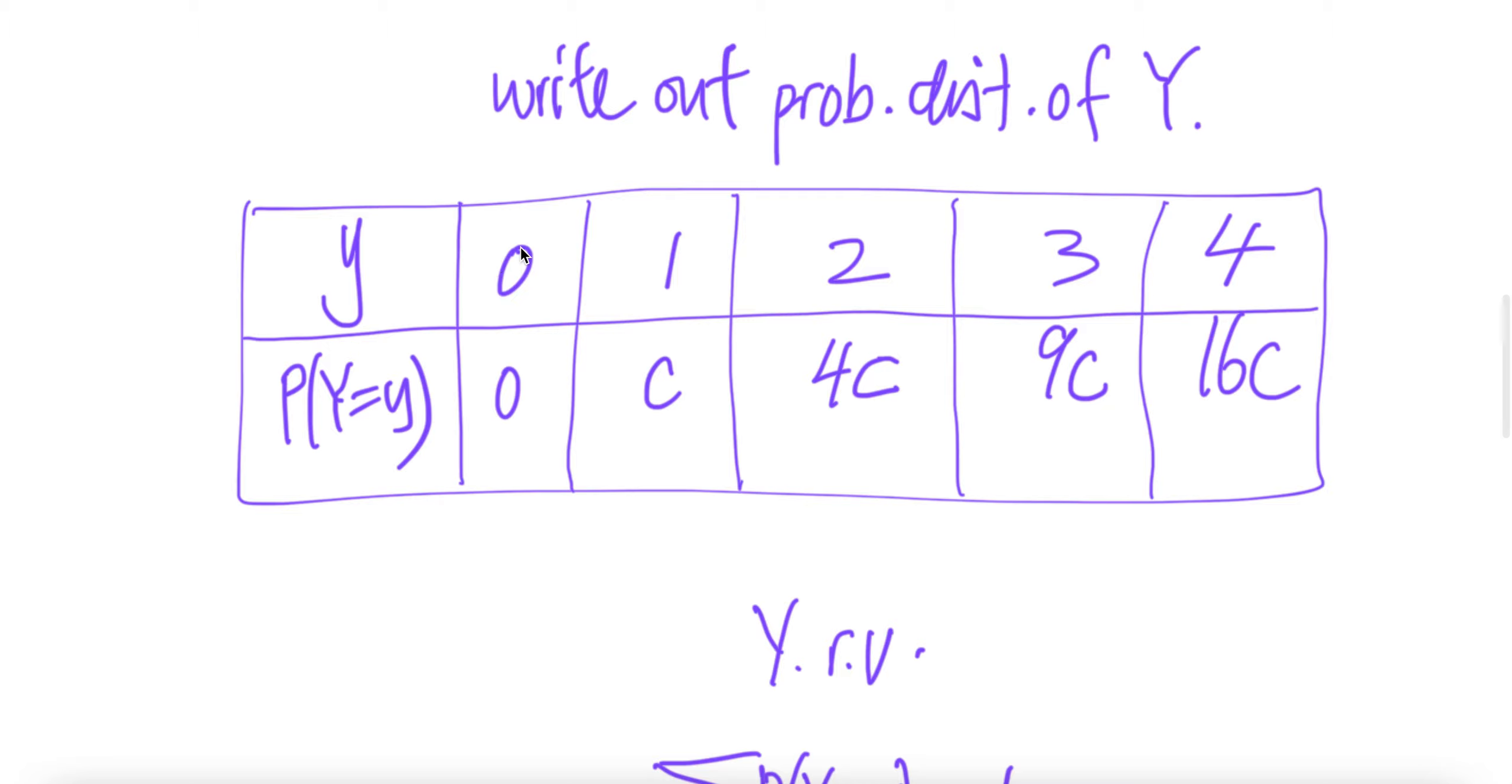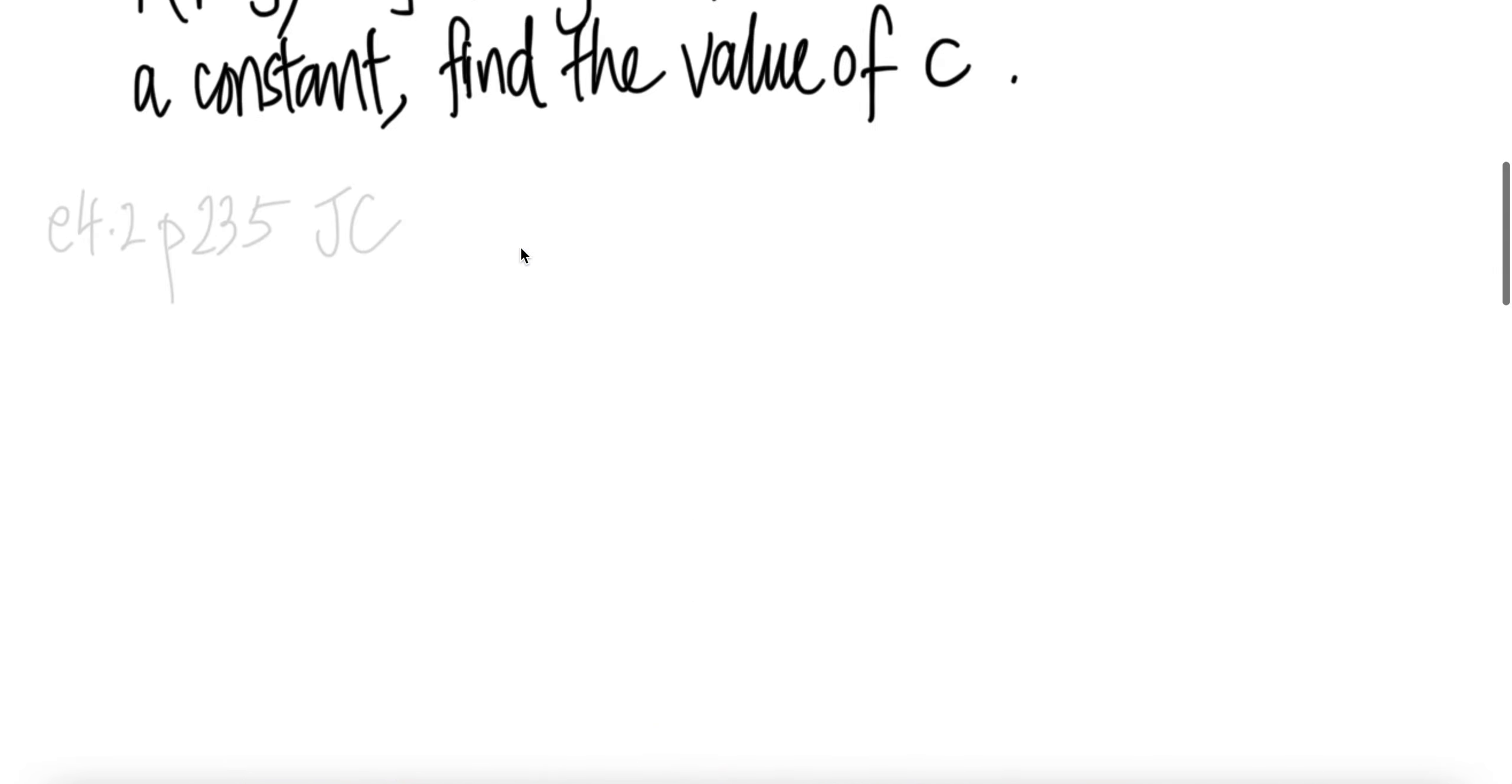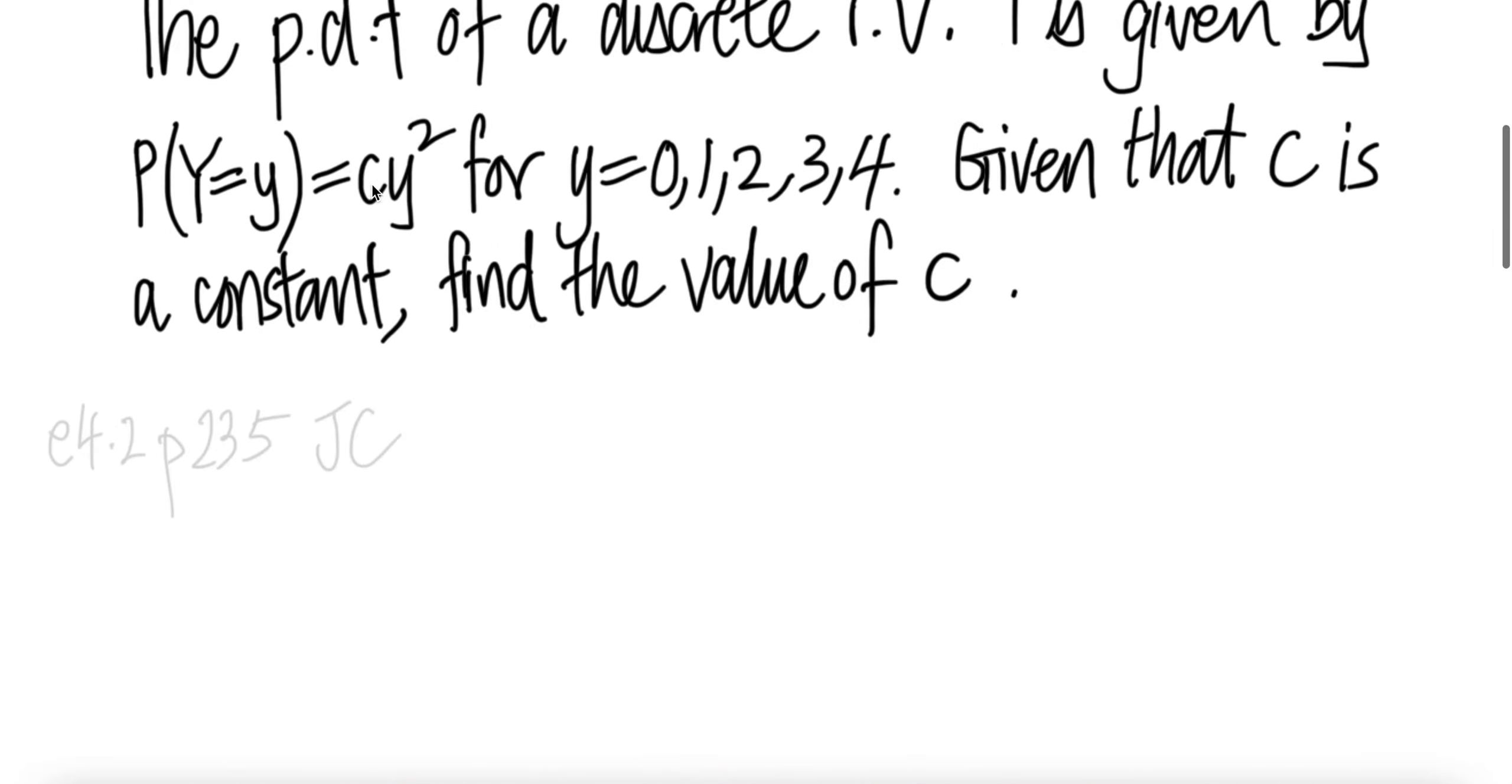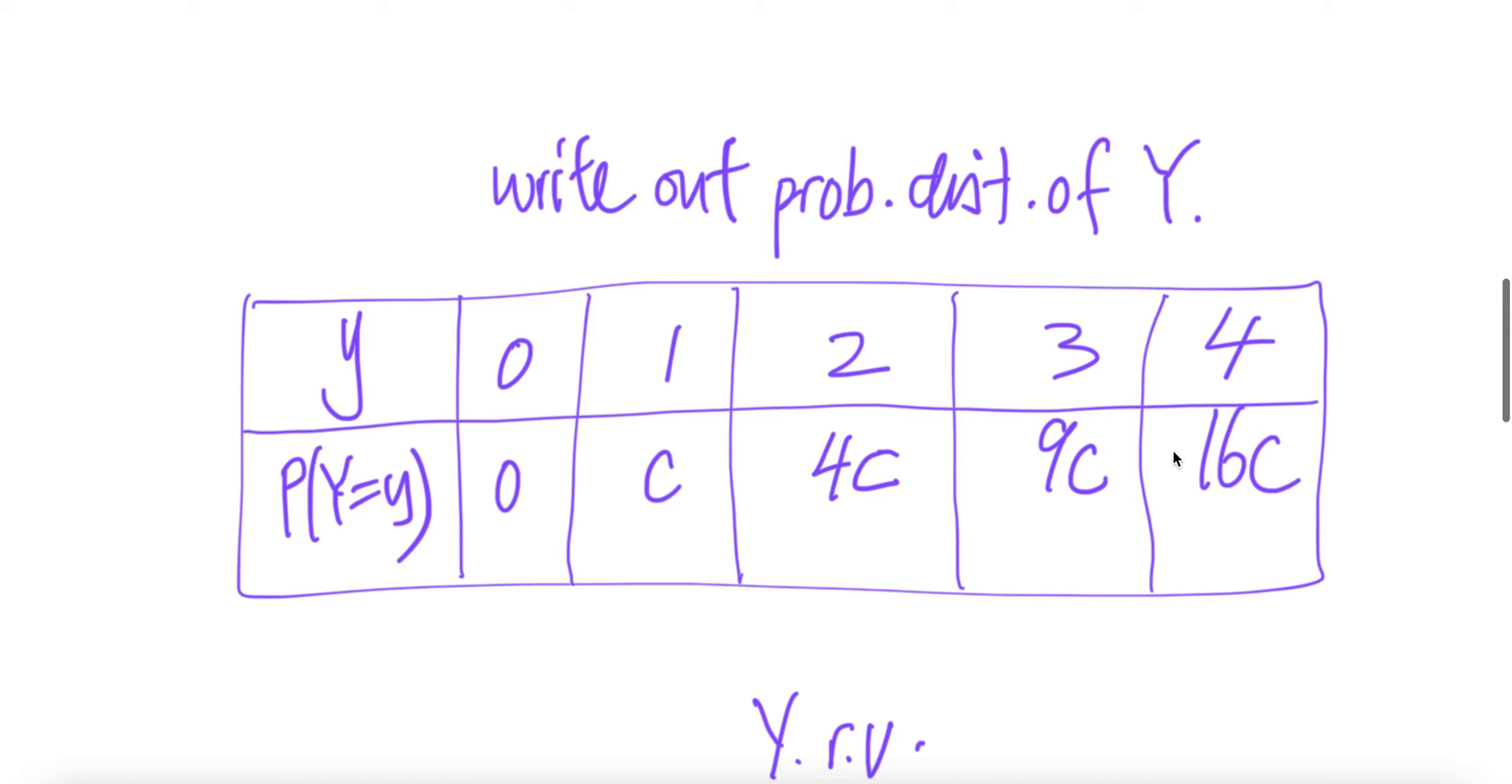So for Y=0, it will be 0. For Y=1, it's 1 squared times c, which is c. For Y=2, it's 2 squared times c, which is 4c. For Y=3, it's 3 squared times c, which is 9c. And for Y=4, it's 4 squared times c, which is 16c.